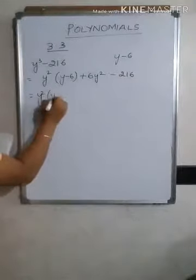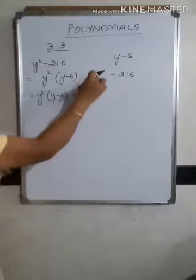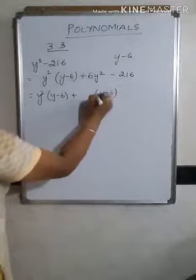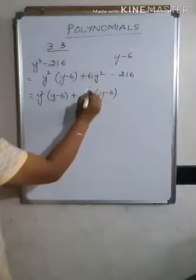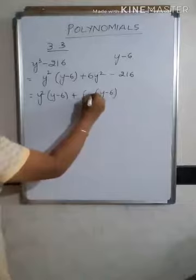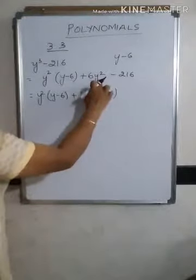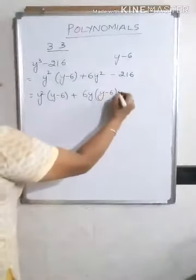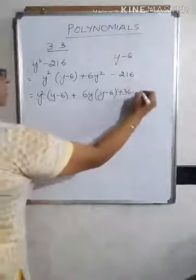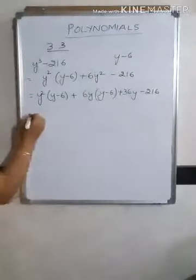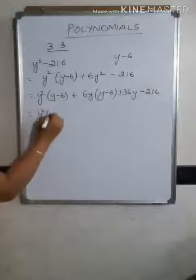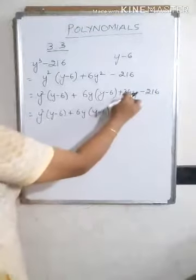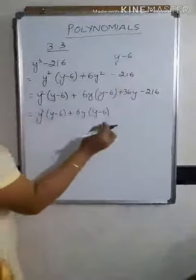Next step: y² times (y minus 6), and now express 6y² in terms of y minus 6. Write y minus 6 and multiply by 6y: 6y times y gives 6y², but the extra term is 6y times minus 6, which is minus 36y. So write plus 36y. Then write minus 216 as it is.